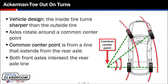I want to clear up something from chat — when we're going around a corner, there is a toe-out condition because of the two different arcs we're turning. The inside tire turns more than the outside tire. The inside tire has to follow a tighter arc, so as it turns more it creates a little toe-out condition on the front. That's where we get our name for toe-out on turns.